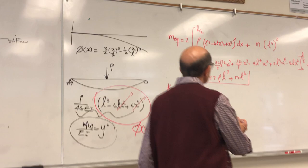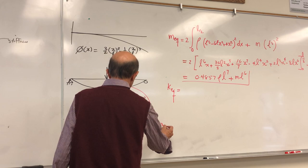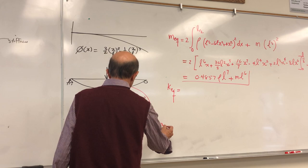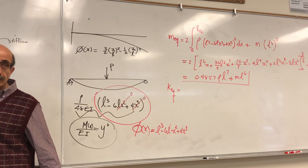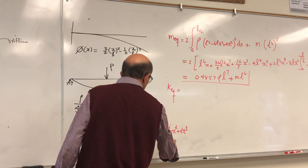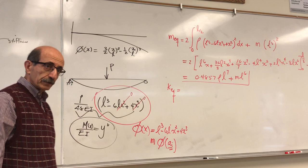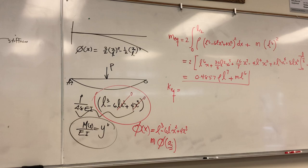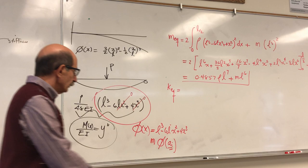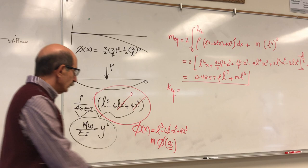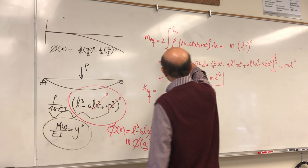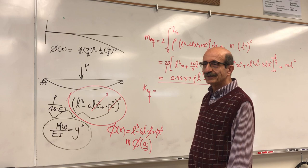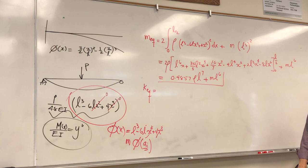Student: Can you explain the L^3 term one more time? Instructor: Phi(x) = L^3 - 6Lx^2 + 4x^3. For the concentrated mass term, phi is evaluated at the mass location, which is x = 0, so those terms vanish and you're left with L^3. Student: Where is rho in the expanded line? Instructor: Rho is here — it should be a factor in the integrand.